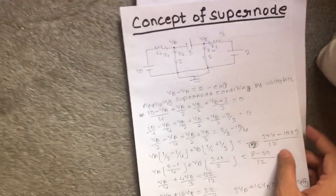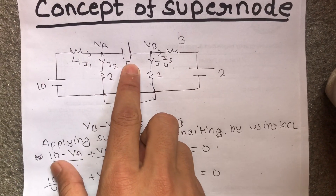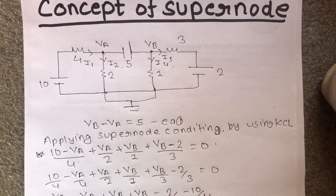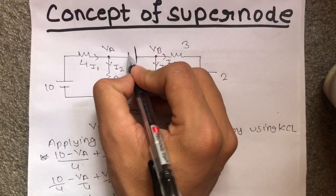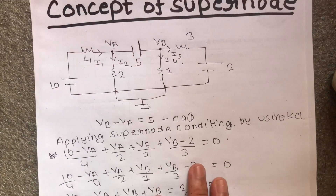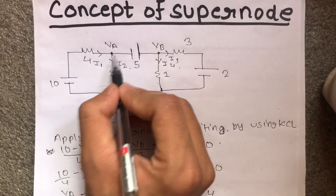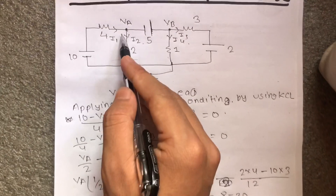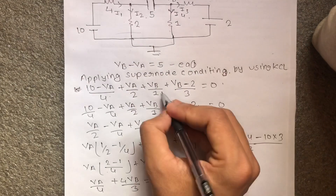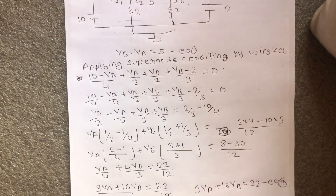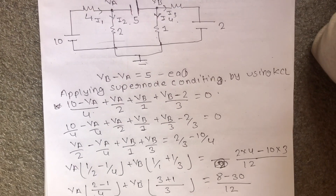So, first of all, we have two voltage sources — both voltage sources — and also the super node. To apply the super node condition, we identify the positive voltage source and the negative voltage source. The super node condition gives VB minus VA equals 5 (which is 10 minus VA upon 4). This includes the current source i2, resistor i4, and i3. This is how we can solve this super node problem. Thank you.